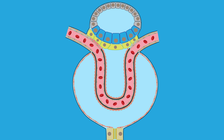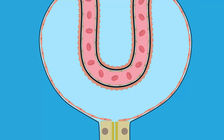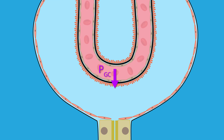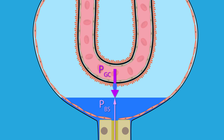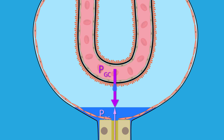The glomerular capillary hydrostatic pressure promotes the formation of the glomerular filtrate. But as the filtrate enters the Bowman space, it creates a small hydrostatic pressure that opposes the glomerular capillary hydrostatic pressure. This pressure is small because the fluid entering the Bowman space is constantly moving into the tubule.